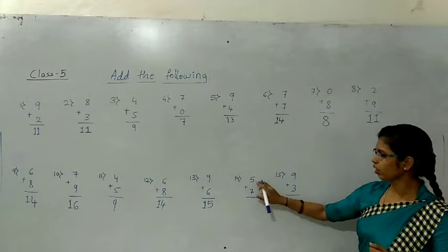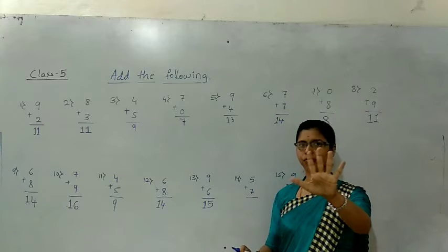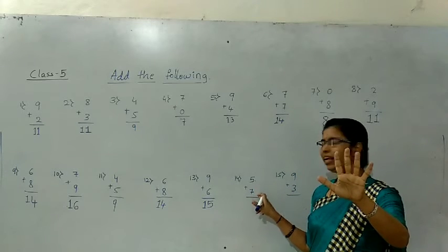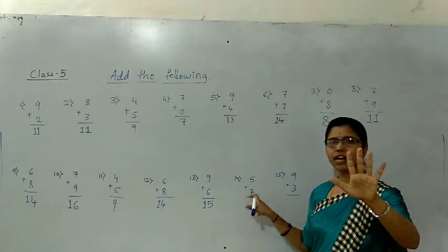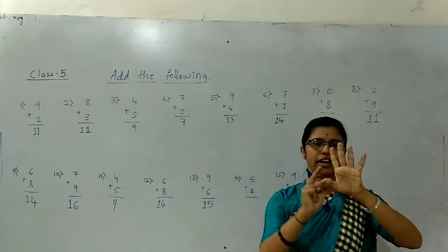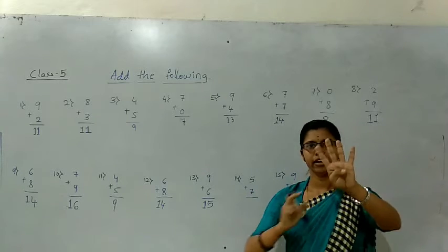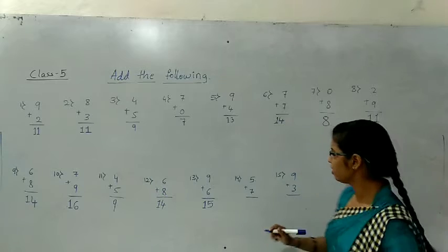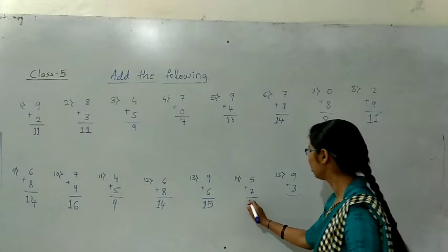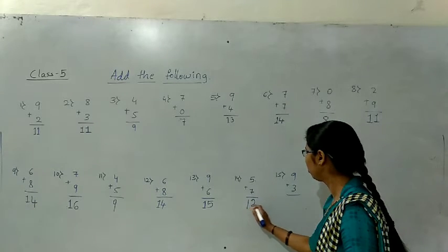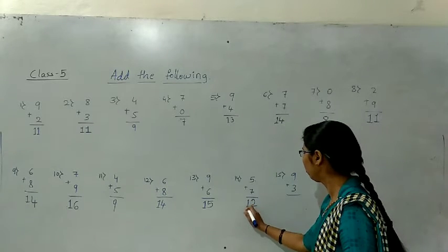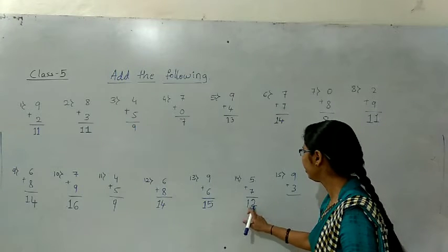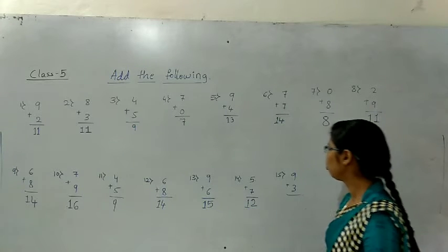Next — 5 fingers. The below number is 7. After 7: eight, nine, ten, eleven, twelve. The answer is 12.